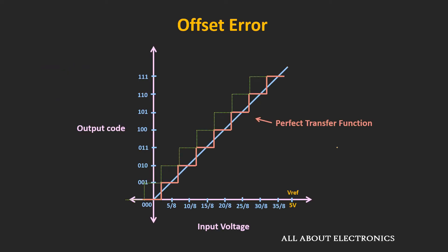Whenever the perfect transfer function shifts either left or right on the horizontal axis, we say there is an offset error in the ADC. As you can see, the transfer function has been shifted by one LSB to the left. Representing the horizontal axis in terms of LSB, ideally when the input is less than 0.5LSB the output code should be all zeros, but due to the offset error, even when the input is less than 0.5LSB the output code is 001.